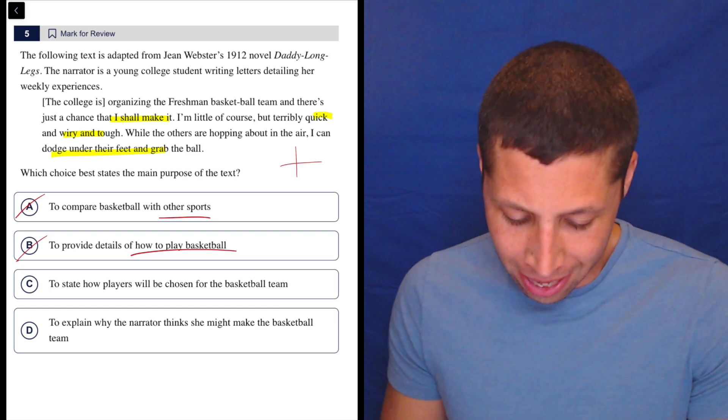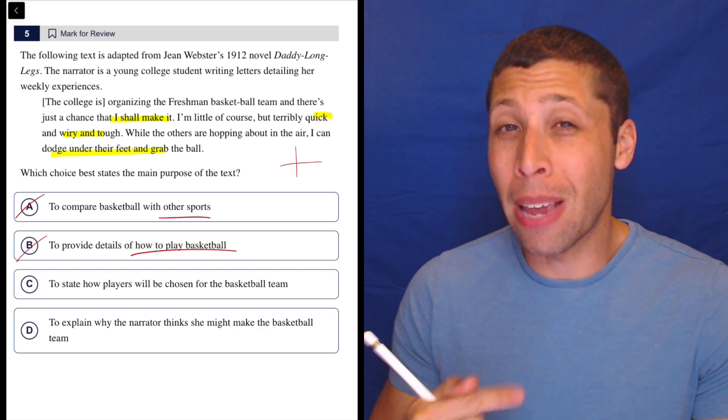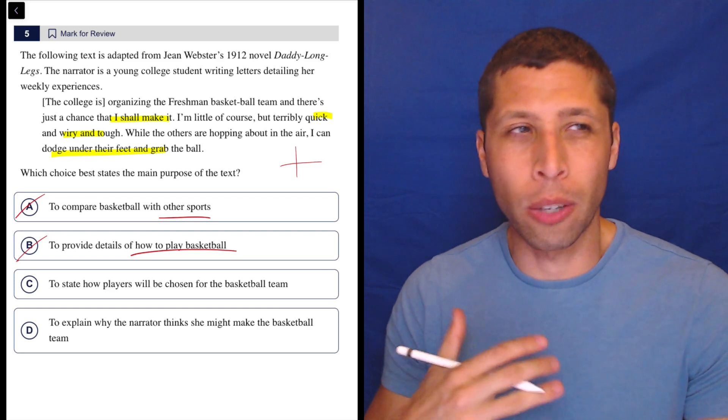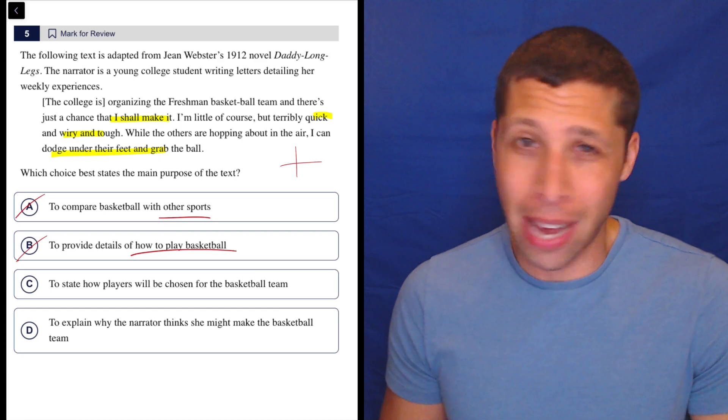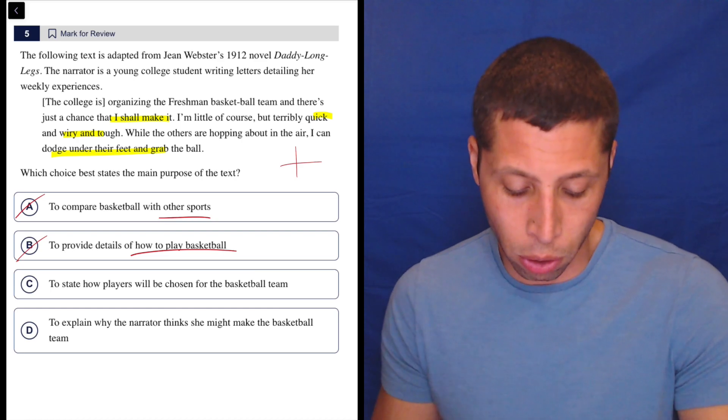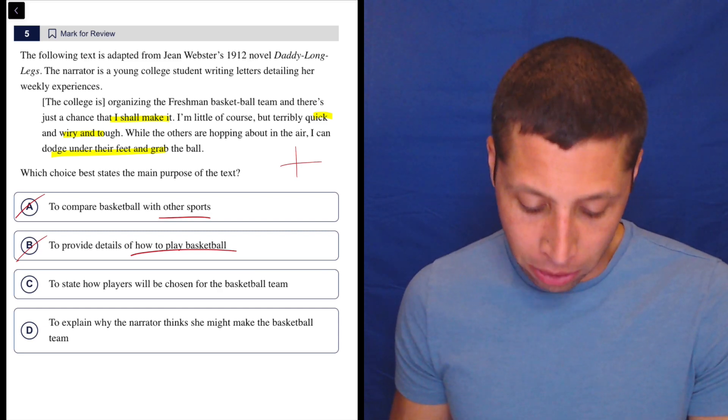C, to state how players will be chosen for the basketball team. Well, it maybe says why she may be chosen herself, but it's not about other players. It's not about the qualities that the coach is looking for, so I would say this is maybe second best. It's still wrong, but I get why people might be more drawn to this than the other two. But look at D, to explain why the narrator thinks she might make the basketball team.